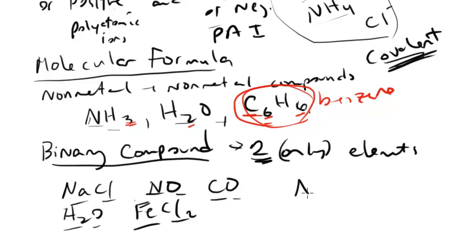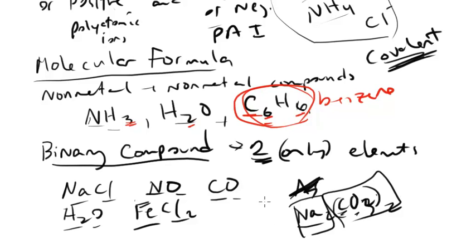Things like Ar is not a binary compound. Na2CO3 is not binary because you've got one, two, three elements in it. Even though you've got two kind of pieces put together, it's not technically binary.